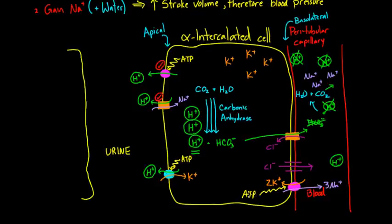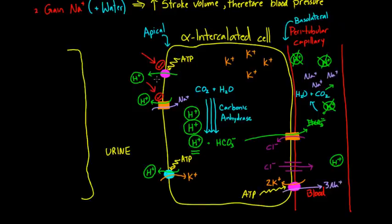These are the different transporters in the alpha intercalated cell, but the key concept is that you're trying to get acid out of the blood. You do that by making extra protons in the intercalated cell, then dumping them into the urine. Getting acid into the urine either takes energy via ATP pumps, or cleverness through a gradient like the sodium gradient. Two of these transporters — the ATP-driven H+ pump and the sodium-driven exchanger — are driven by aldosterone. That's where aldosterone comes into play in these cells.